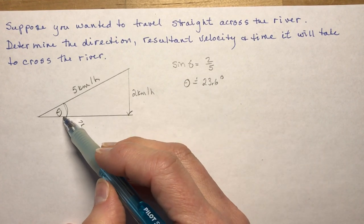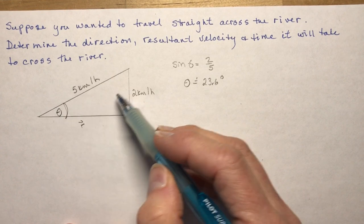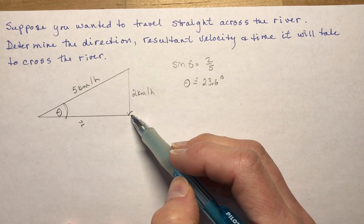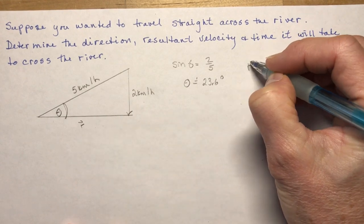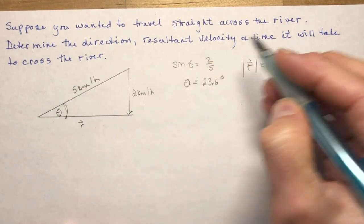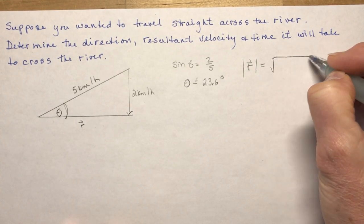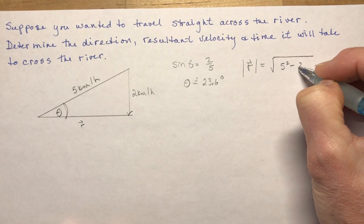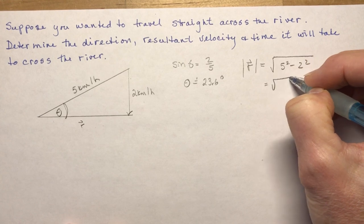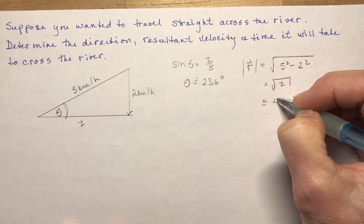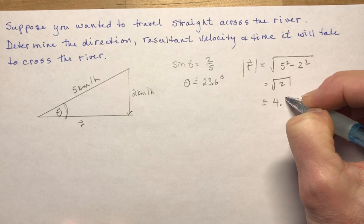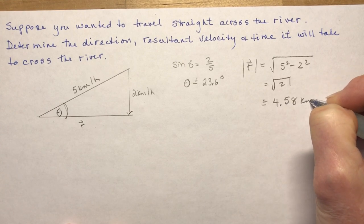Okay, so I know what the direction is. It says, what's the resultant velocity? So the resultant velocity now is going to be, now watch, this is my hypotenuse. So I want the square root of 5 squared minus 2 squared, or the square root of 21. And that's going to give me about 4.58 kilometers per hour.